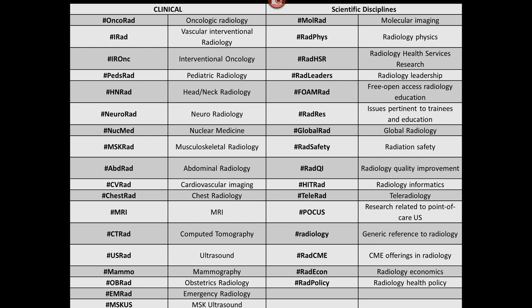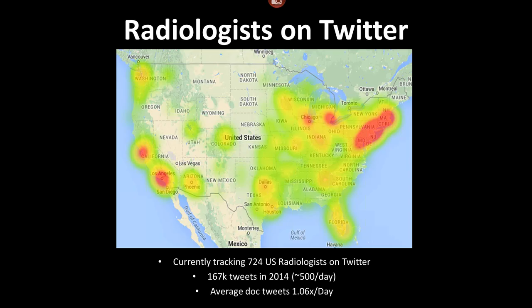This is what the hashtag ontology looks like. The most important ones to keep in mind are at the top: vascular interventional radiology, the IRAD hashtag, and IRONC — the interventional oncology hashtag. Along the right-hand side you'll see disciplines like health services, research, leadership, and RadRes for issues pertinent to radiology trainees and education. As you are out there as an individual or department posting, make your content searchable. Hashtags can now be used on Facebook, Twitter, Instagram, and all major social media networks — important so the content doesn't get lost in the internet never to be found again.